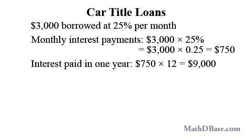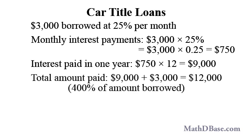At the 12th month, the total interest paid amounts to 3 times $3,000, or $9,000. The total amount that Ruby paid is the total interest paid over 12 months plus the amount borrowed, which is $9,000 plus $3,000, or $12,000 — 400% of the amount borrowed.